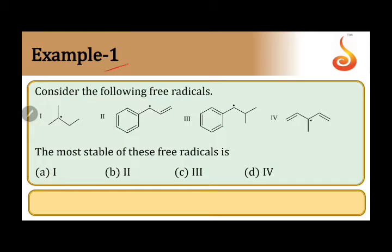Example 1: consider the following free radicals. Let's write down which are these free radicals, then we will see which effect we can apply here. This carbon which is having an odd electron is attached to three carbons directly, so we can call it as a tertiary free radical. We can apply here hyperconjugation.